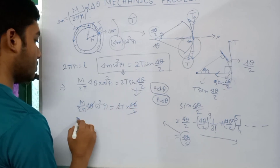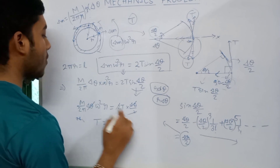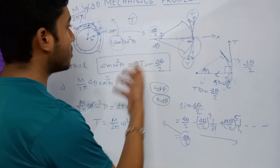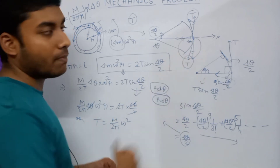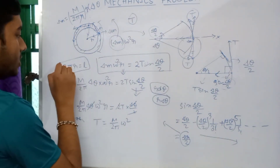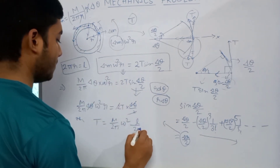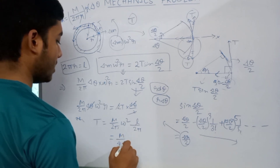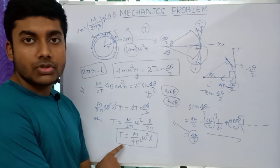The δθ cancels, giving T = (m/2π)·ω²r. Since 2πr = l, we have r = l/2π. Substituting: T = (m/2π)·ω²·(l/2π) = mω²l/(4π²). This is our required tension in the string.